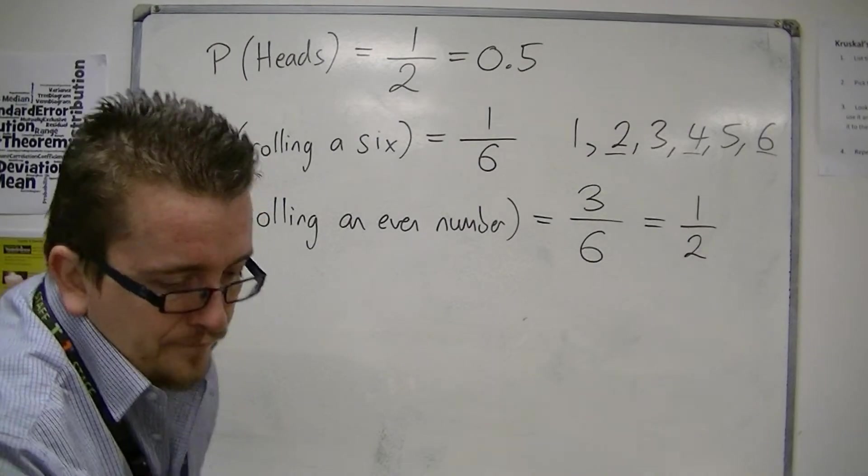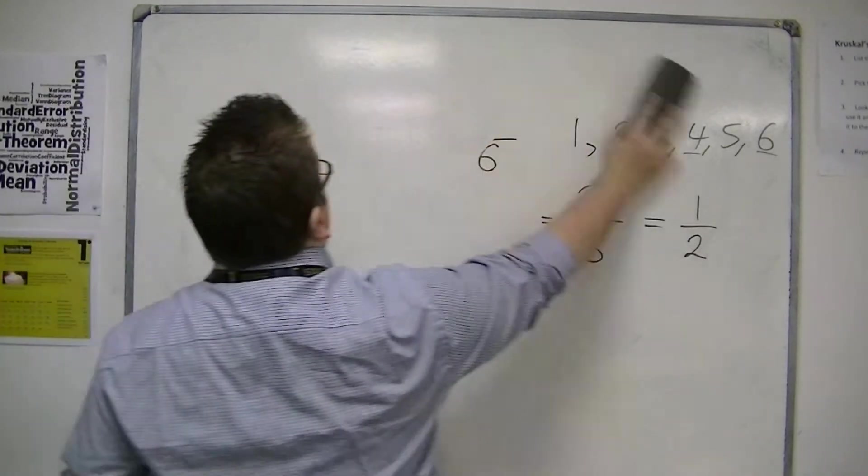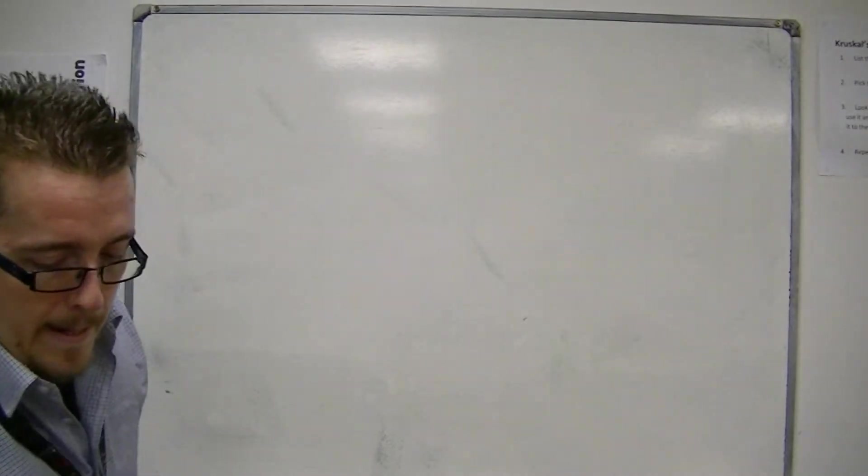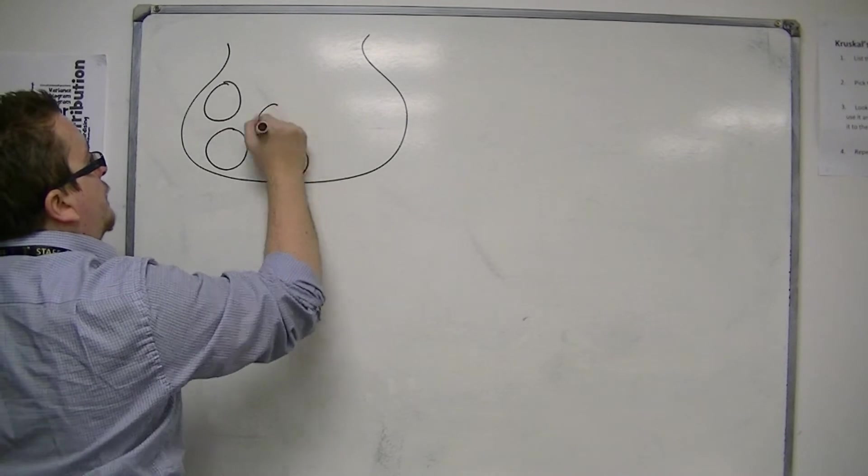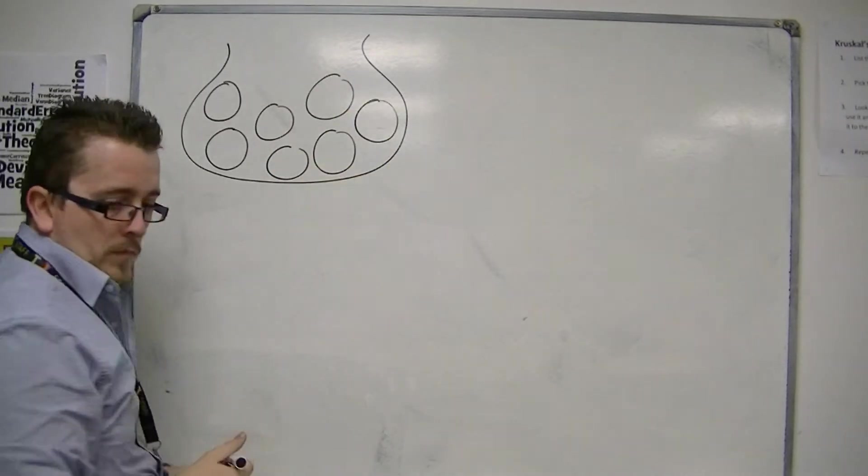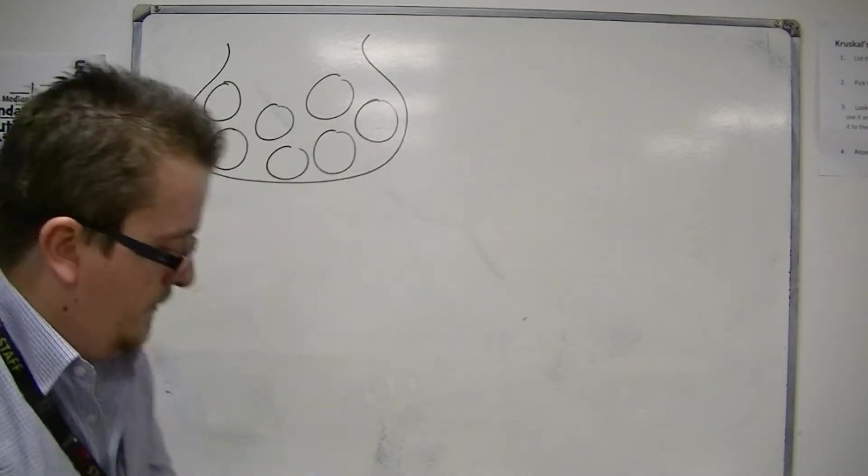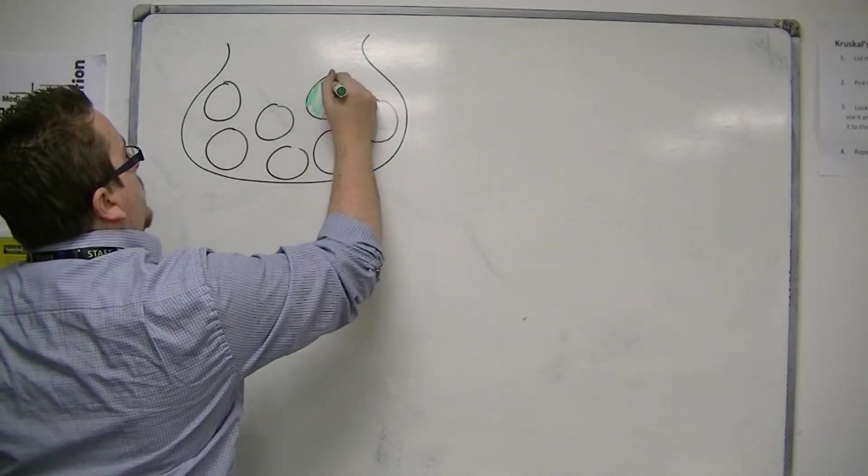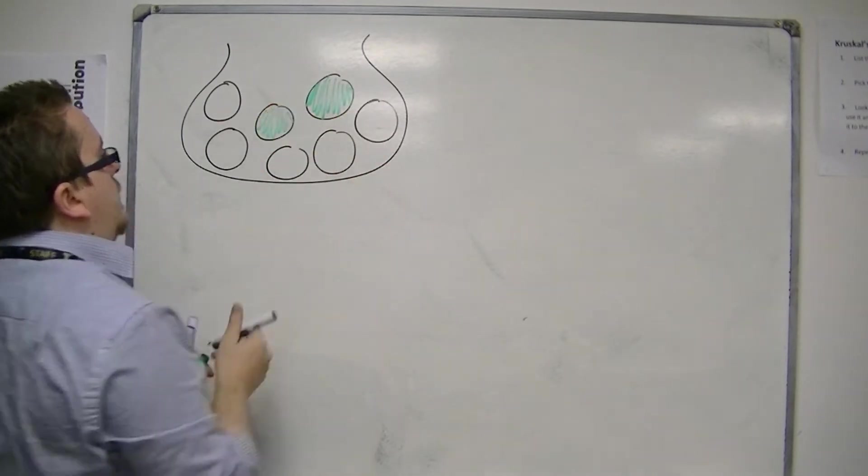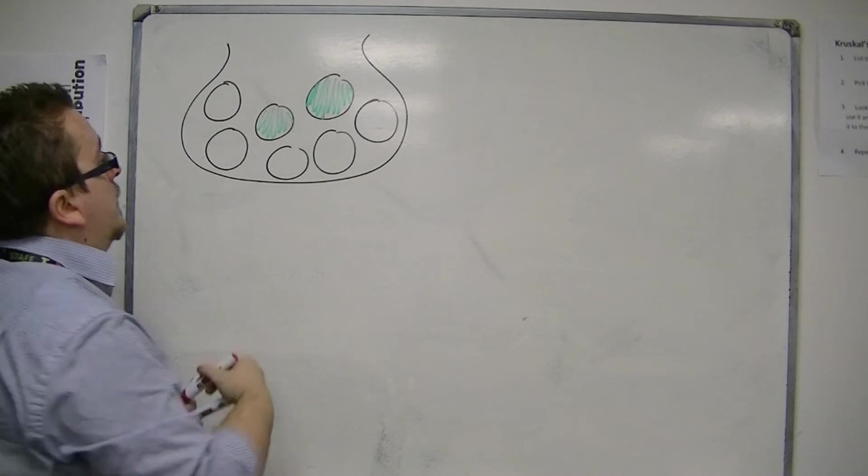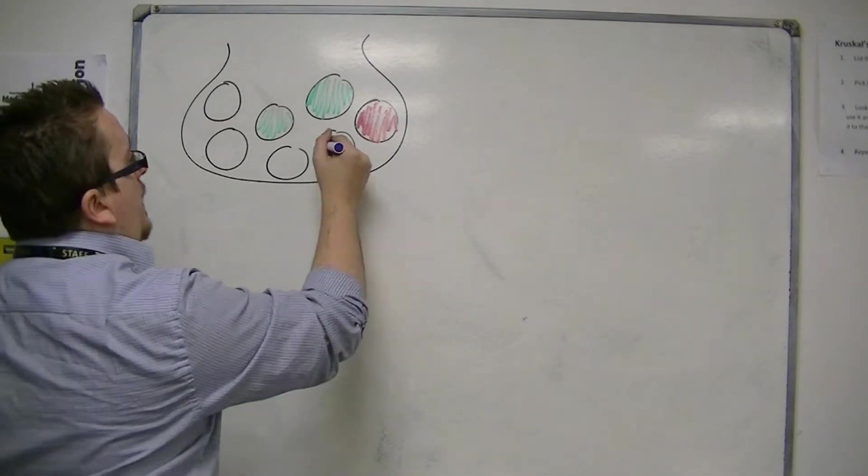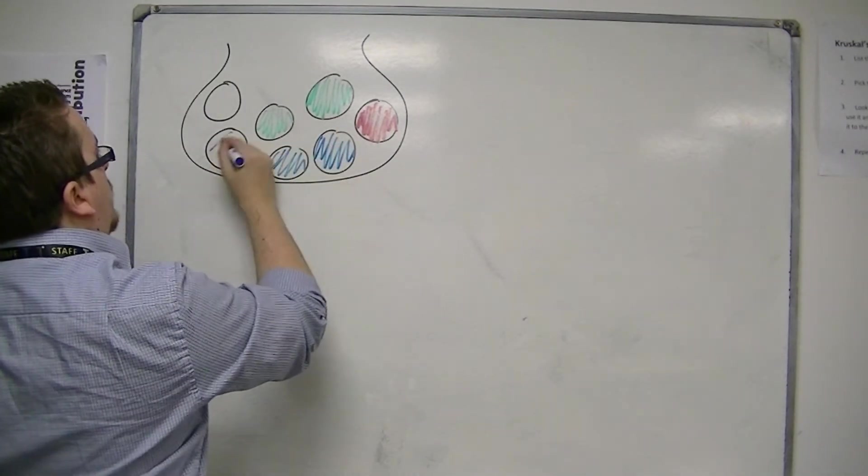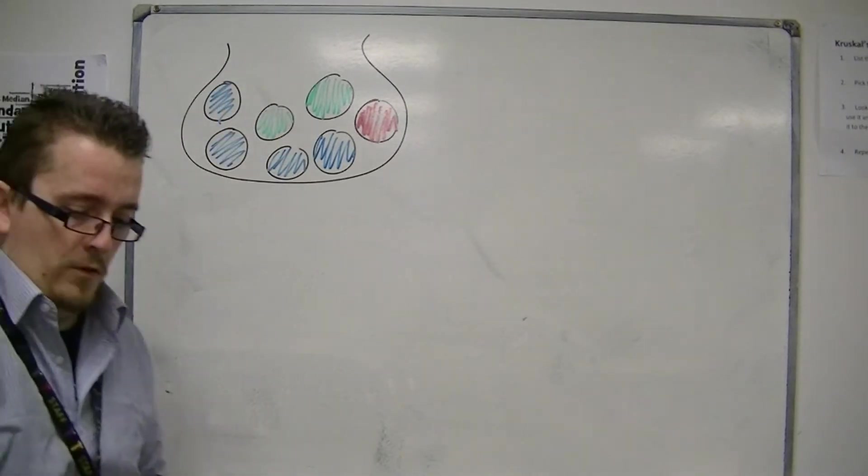Let's have a look at another idea. So let's say I have a bag, and in the bag I have a number of colored balls. I do actually have some colors. So let's have that one as green, and that one as green. I'm going to have that one as red, and then those ones as blue.